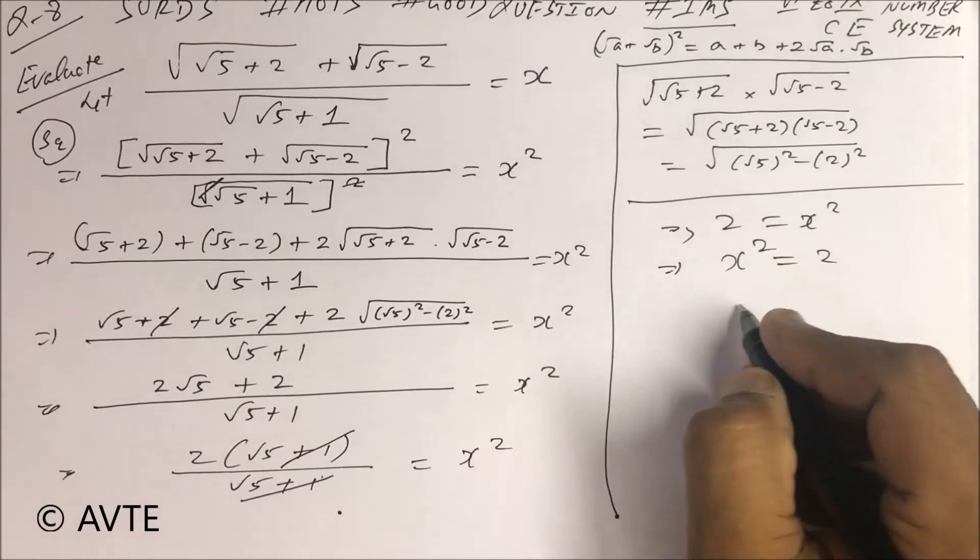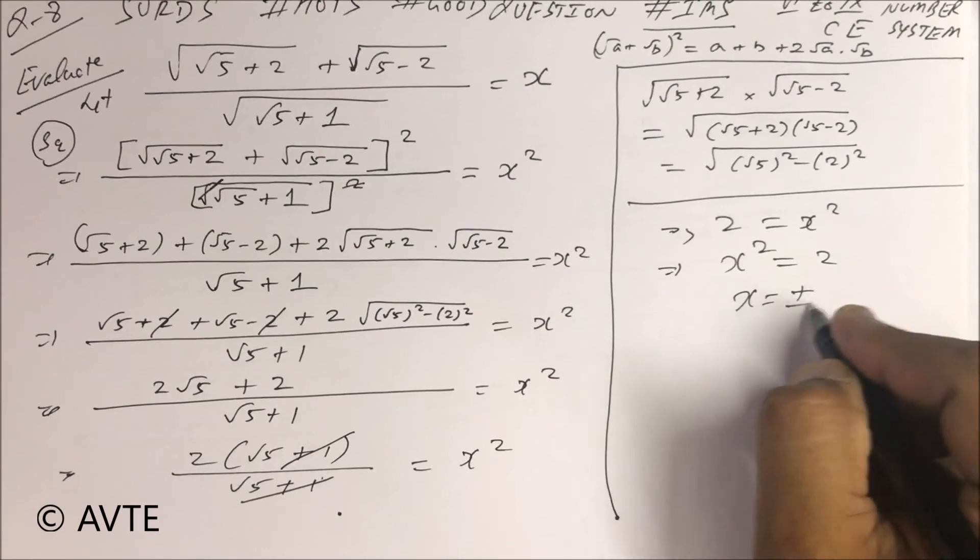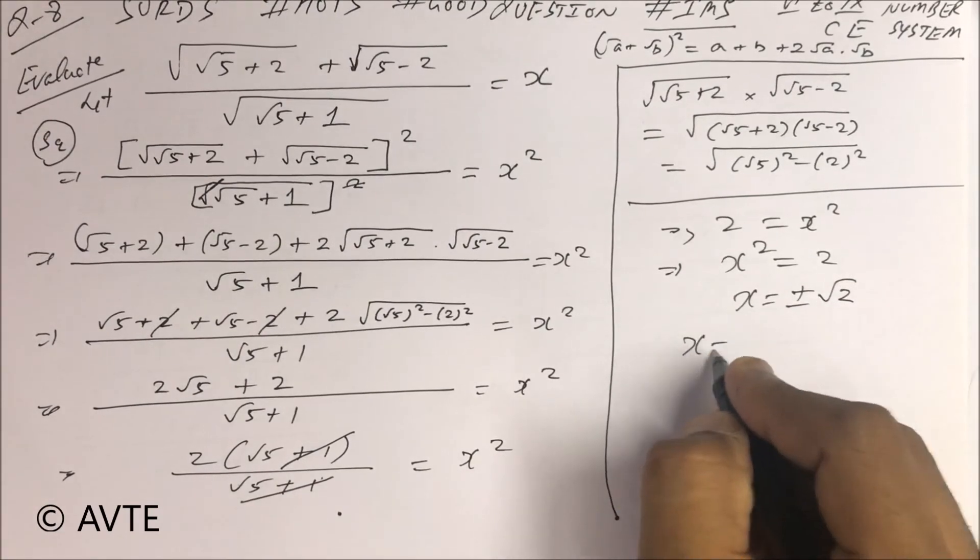It means x² equals 2, x equals ±√2, but we take the positive value, so the answer is √2.